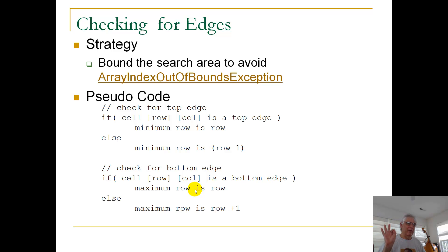If I'm in the bottom row or the bottom edge, I can't check the row below. There is no row below. So the max row I can check is just row, the row that I'm in.